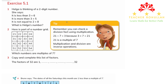The first question says Helga is thinking of a two-digit number. She says it is less than 3 times 6. We know that 3 times 6 is equal to 18, and it is more than 3 times 5. So 3 times 5 is equal to 15. That means the number is less than 18 and more than 15.